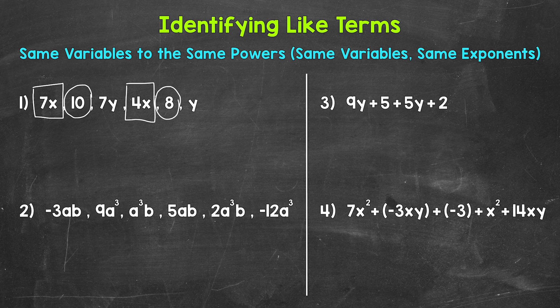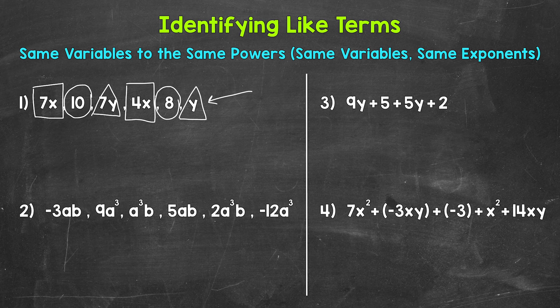Lastly, we have 7y and y. They share that variable of y, and there isn't any exponent shown, so these are to the power of 1. 7y and y are like terms. We can use triangles to separate that pair from the other pairs. For the term y, if no coefficient is shown, the coefficient is 1 — we have 1 of whatever follows. We can always write that coefficient of 1 in front of the variable, so that's technically 1y. Something to keep in mind as far as coefficients.